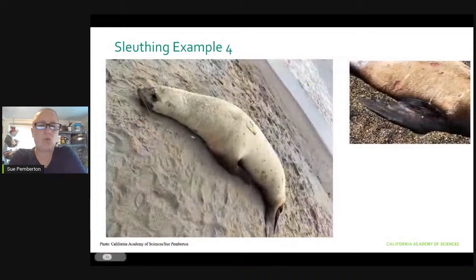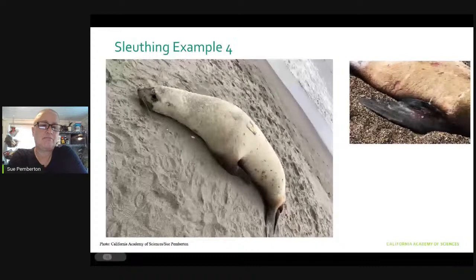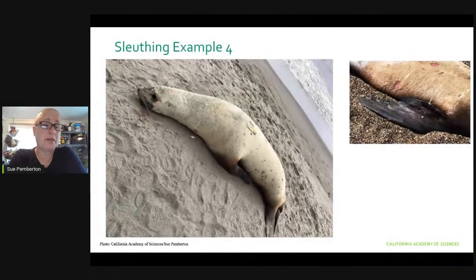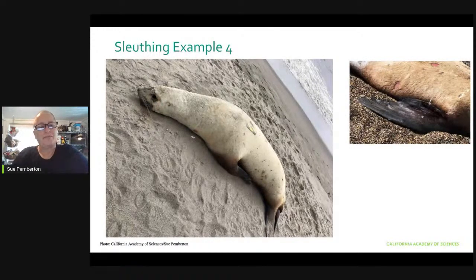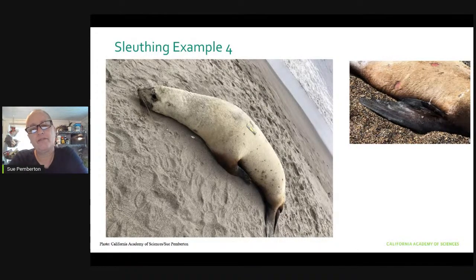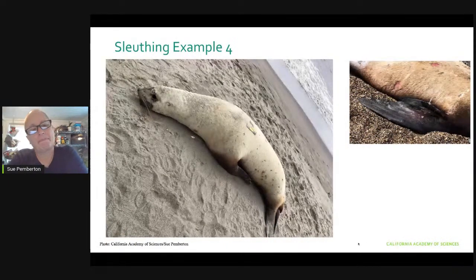Sleuthing example four. We again have the benefit of a scale bar, and the scale bar is very small, which means this animal is very big. Look at the color of the pelage and the shape of the face. Those whiskers are going to be very helpful. We can't really see the front flipper or the rear flippers in the left photo, but in the right photo you can see a very large, very wide front flipper.